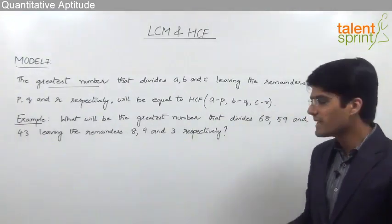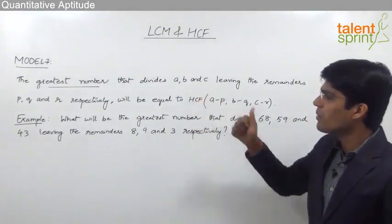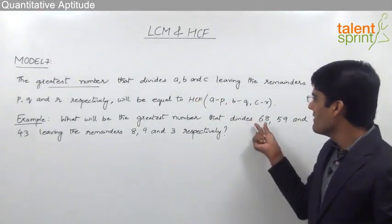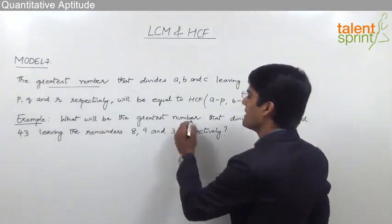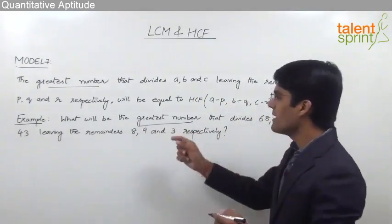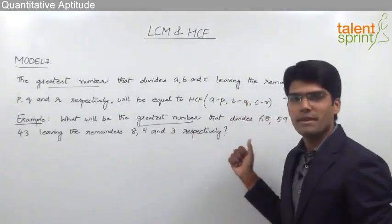So as you can see, this is quite similar to what we have discussed. The three dividends are 68, 59, and 43, and when a particular number divides these three numbers, the remainders are 8, 9, and 3 respectively.